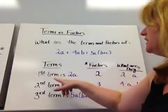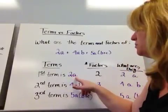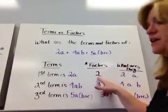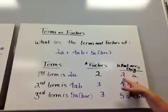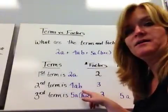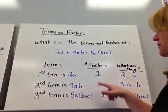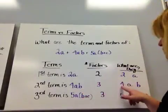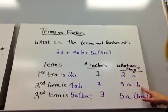Factors. In the term 2a, the 2 is multiplied by the a, so there's two factors there. What are the factors? The 2 and the a. In the term 4ab, how many factors are there? Well, there's three. It's 4 times a times b, so I have three factors.